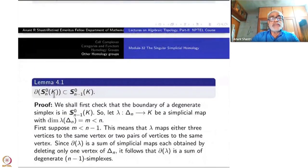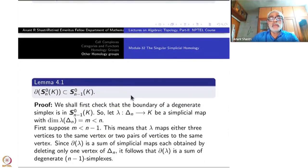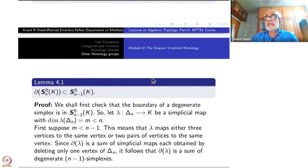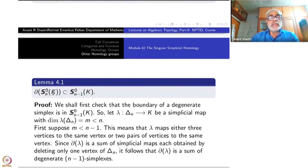All degenerate simplices and all λ minus sgn(α)·λ^α together generate a subgroup, which we call S⁰(K). This is obviously a chain subgroup: the boundary of S⁰(n) is contained inside S⁰(n-1), and so on. If we verify this, then S⁰(K) is a sub-chain complex, and we can take the quotient to get another chain complex. We verify this for generators, since the boundary map ∂ is linear.